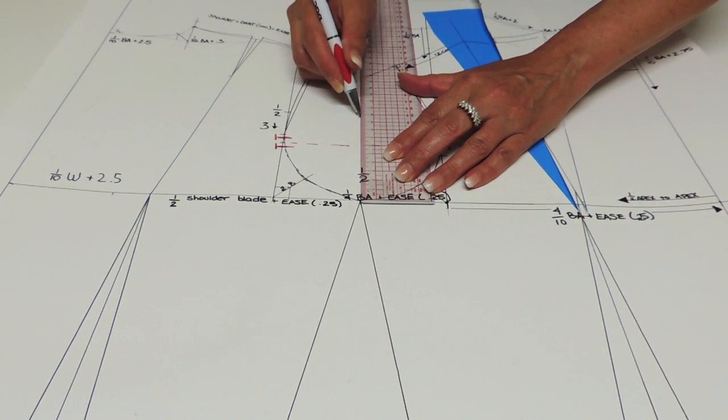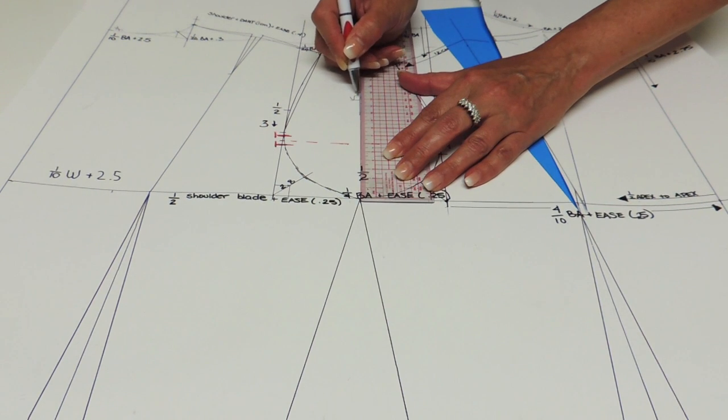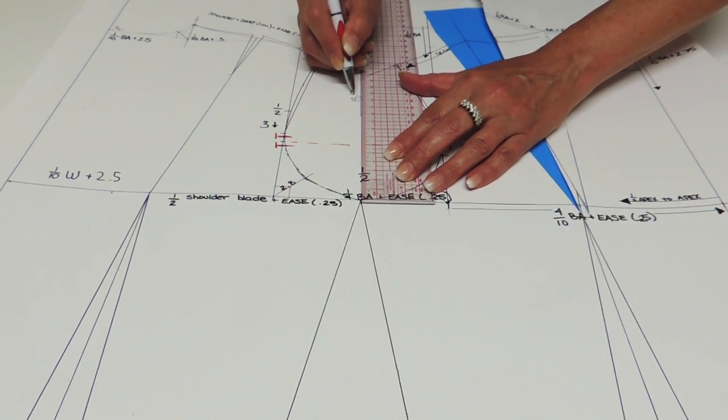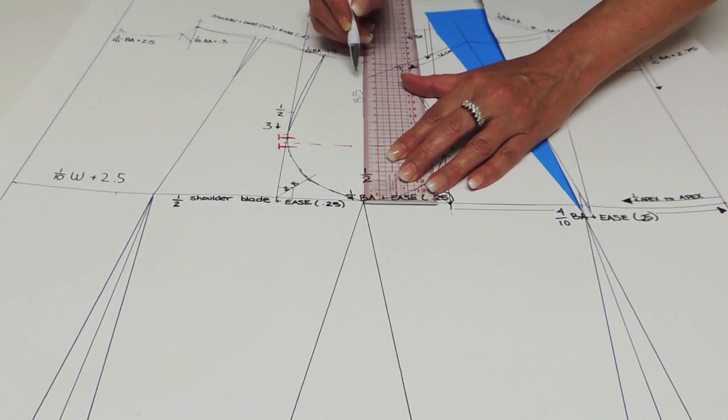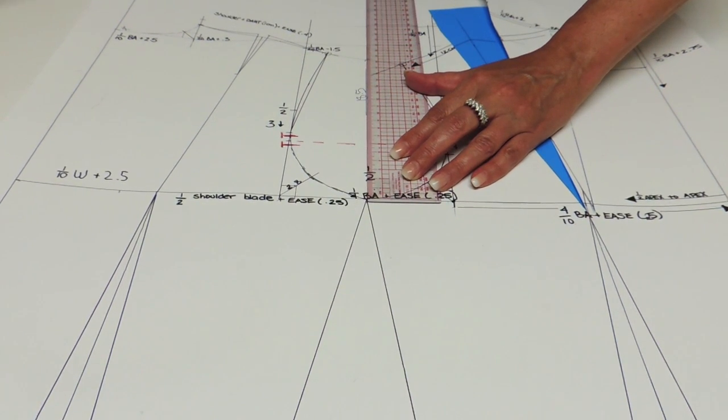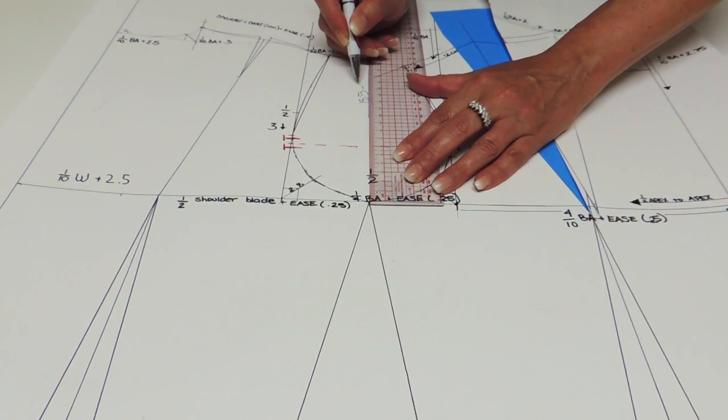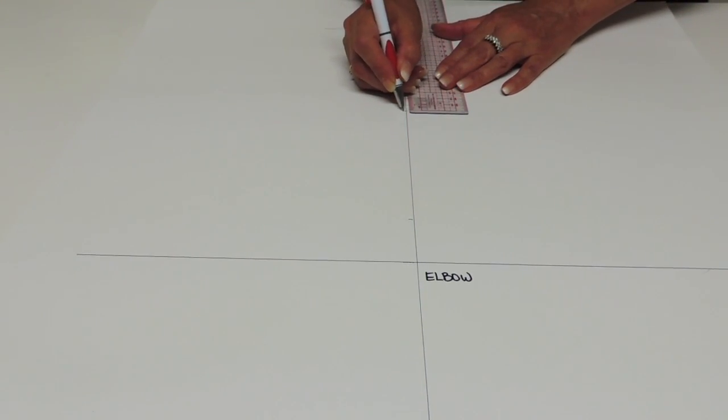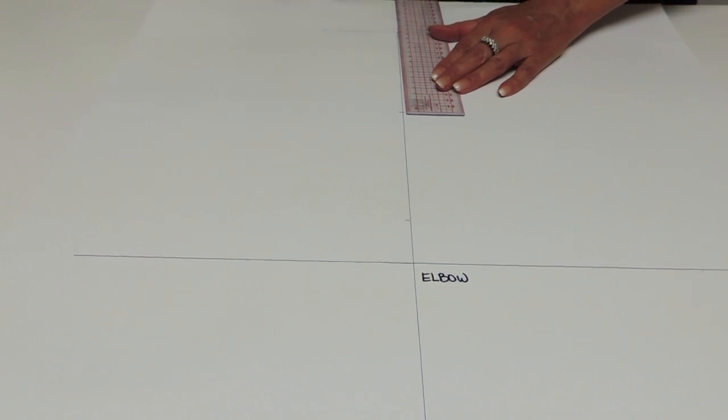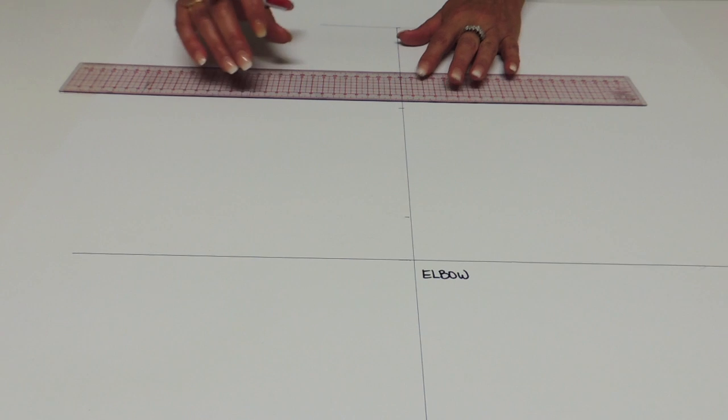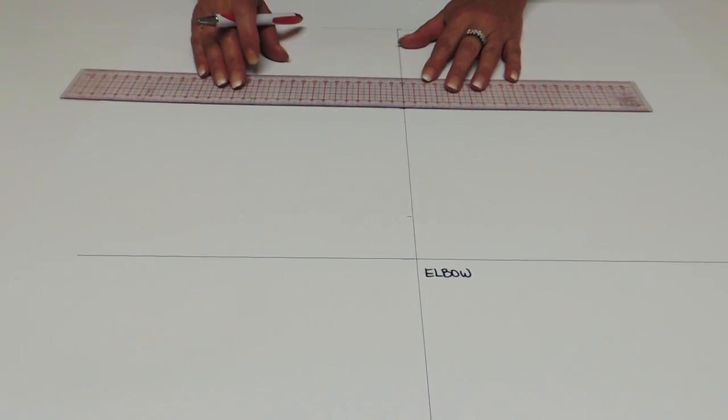So I have my example here of 18.5 and to that measurement you're going to remove 3 centimeters. From that measurement I'm going to measure from the sleeve head and put my 15.5 so half the difference of the armo minus 3 cm and I'm going to square on both sides.